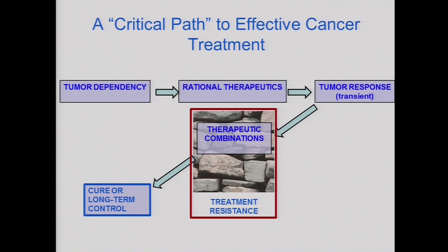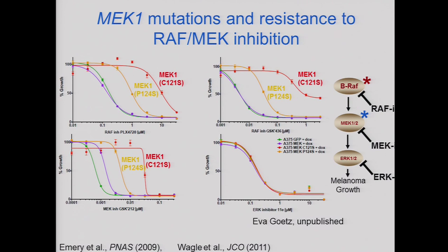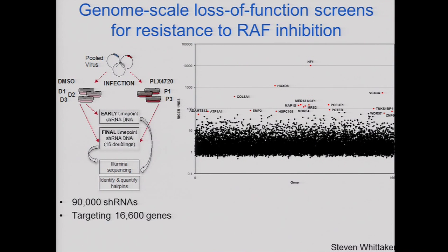We use genetics to identify dependency, give rational therapeutics, and get responses — but resistance is a major problem. To overcome it we're going to have to make combinations that give us long-term control. We are actively sequencing tumors not only prior to treatment but after a great response following relapse. One patient who had metastatic melanoma had a MEK1 mutation, which confers resistance to RAF inhibitors and MEK inhibitors. ERK inhibitors, which hit one more module downstream, appear to overcome this.